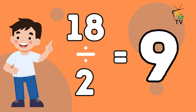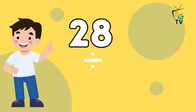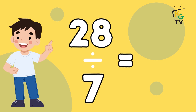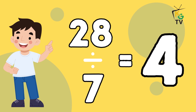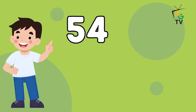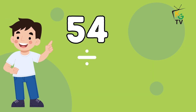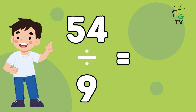28 divided by 7 is equal to 4. 54 divided by 9 is equal to 6.